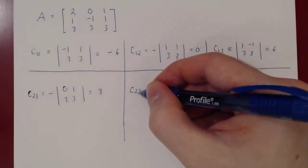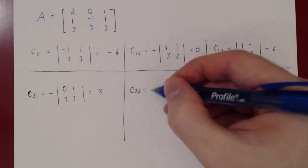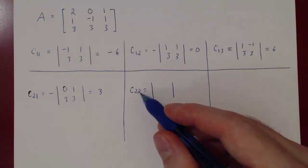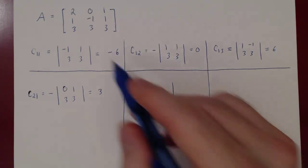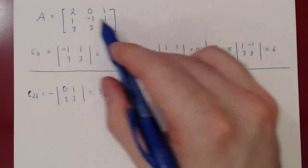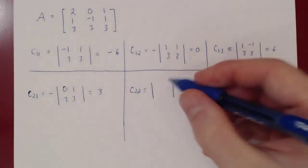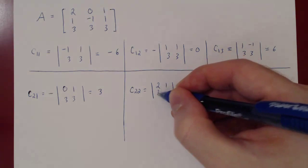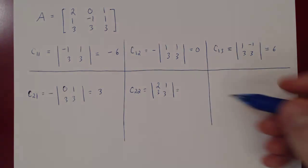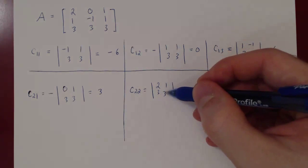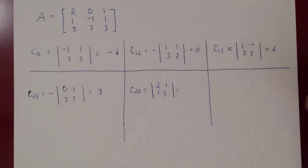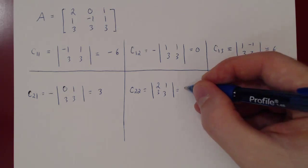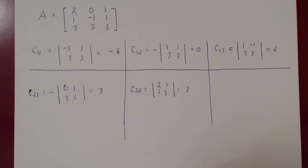Then C22: 2 plus 2 is even, so no negative sign. We delete row 2, column 2, which gives you the matrix 2, 1, 3, 3. The determinant is 2 times 3, which is 6, minus 3 times 1, which is 3, so 6 minus 3 equals positive 3.